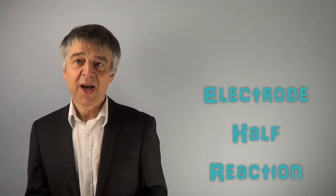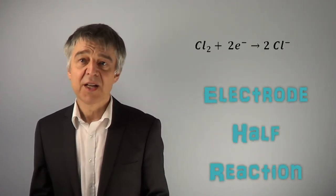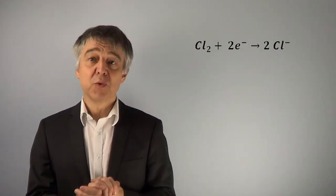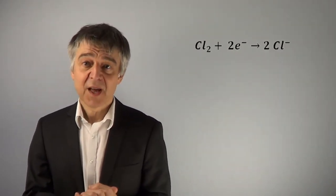The half-reactions of the chlorine and hydrogen electrode are as follows: Cl₂ plus 2 electrons gives 2 chloride anions.